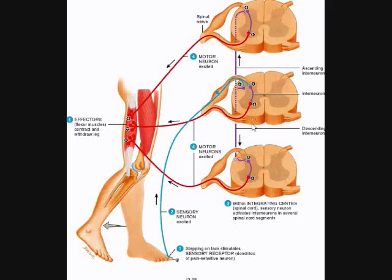Although this reflex image does not depict it, this reflex will also have reciprocal innervation, causing inhibitory signals to go to the quadricep muscles, turning them off so that the hamstring muscles can contract more easily. This is very typical reciprocal innervation — resulting in the opposite effect to the antagonist. That is the flexor or withdrawal reflex.